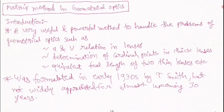Welcome to physics optional class. Today we start the introduction to the matrix method in geometrical optics. It is a very useful and powerful method to handle problems of geometrical optics. With this matrix method we can find the u and v relation in lenses, determine the cardinal points in thick lenses, and find the equivalent focal length of two thin lenses.